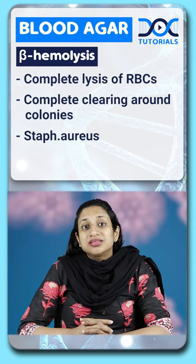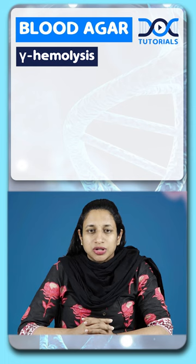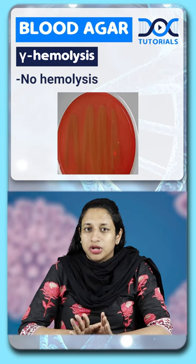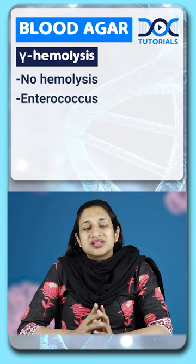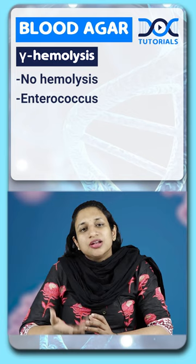The third type is gamma hemolysis, which is actually a misnomer — it means there is no hemolysis at all. This is what is seen with enterococcus. Enterococcus does not produce any hemolysis on blood agar, and that is one feature to keep in mind along with the shape of enterococcus.